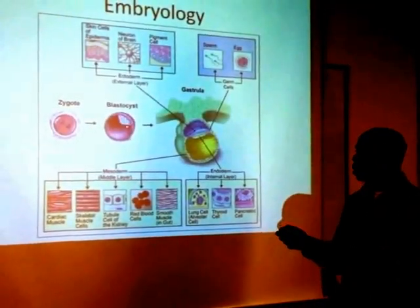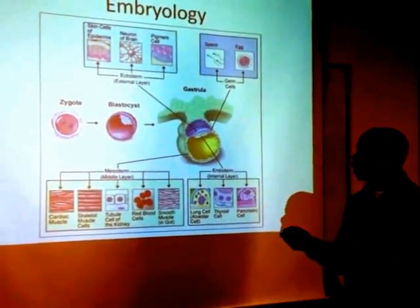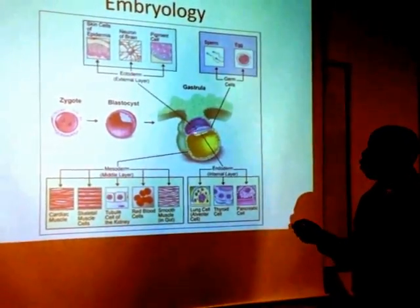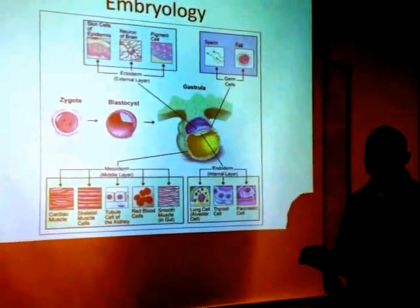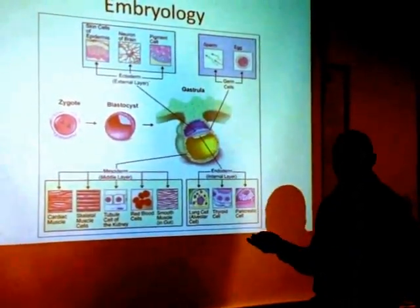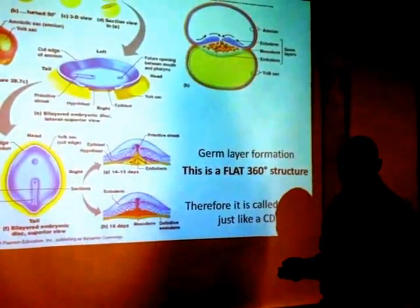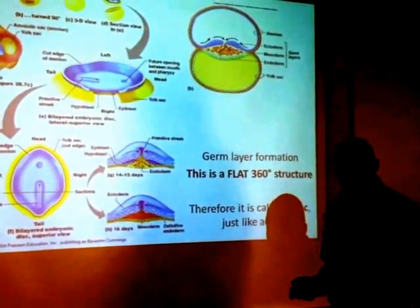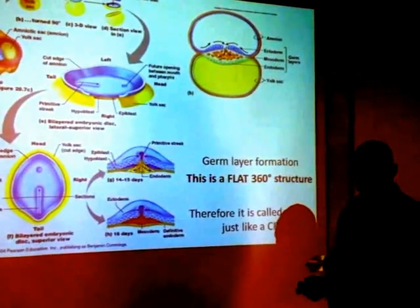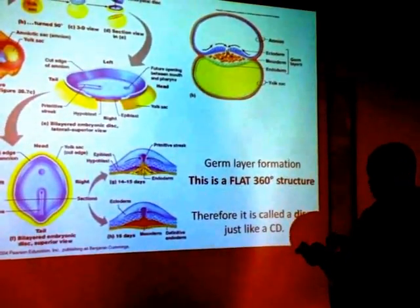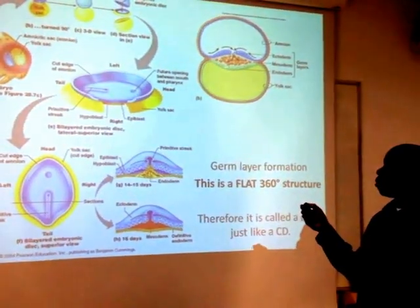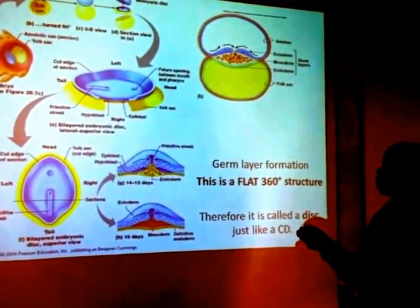What then happens is we get this little mound of cells forming, and this mound of cells then goes on to develop to form what's called the embryonic disc. Students always ask me about this disc — what is it? Well, it's very similar to something you might have at home: a normal CD. It's a flat disc. And here's your embryonic disc.